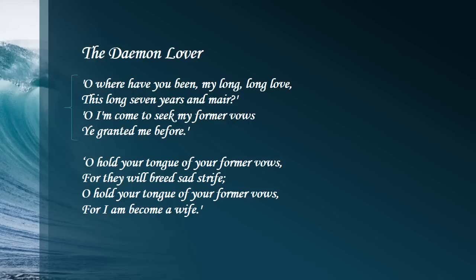So here we are. We begin with the poem The Demon Lover, and it starts out with some dialogue. It says, 'Oh, where have you been, my long, long love? This long seven years and more. Oh, I'm come to seek my former vows you granted me before.' We already see with 'more' spelled as 'mare' — it's the Irish dialect, the common people talking, and the story being told through dialogue.